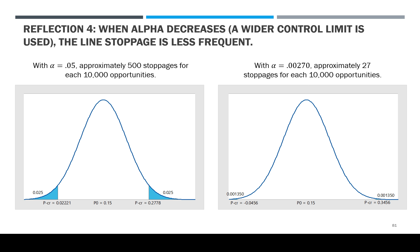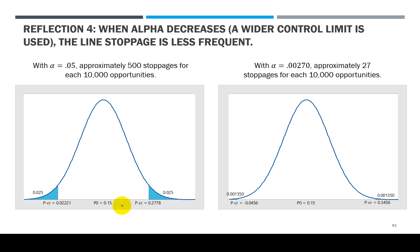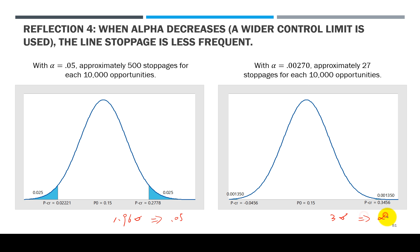So earlier I said when your alpha is smaller, meaning that you're using wider control distance. Here this is 1.96 sigma, here it's a 3 sigma. So the alpha here is 0.05, the alpha here is 0.027.